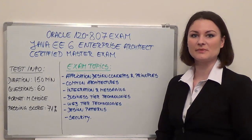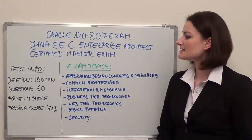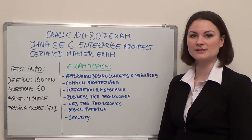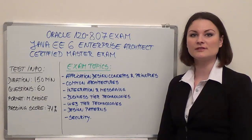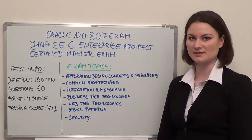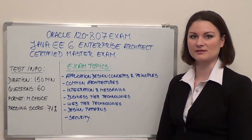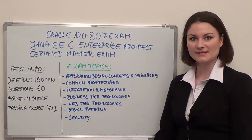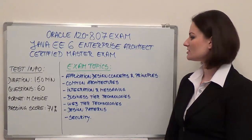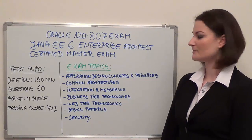First off, let's start with some basic test information. Time allowed on this exam is 150 minutes. There are a total of 60 questions in multiple choice format, and the passing score is a minimum of 71% correct answers. Exam candidates will have questions from the following seven topics, which I'm going to present one by one.